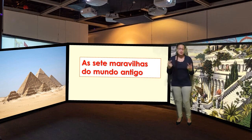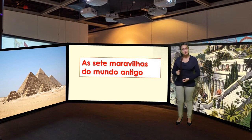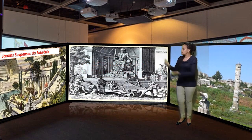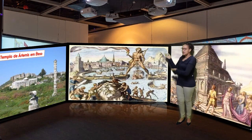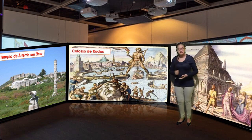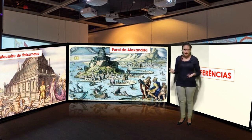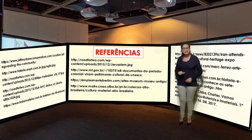Com o tempo, esses monumentos ficaram conhecidos no mundo todo, compondo as sete maravilhas do mundo antigo: Pirâmides do Egito, Jardins Suspensos da Babilônia, Estátua de Zeus, Templo de Ártemis em Éfeso, Colosso de Rodes, Mausoléu de Halicarnasso e o Farol de Alexandria. Aqui estão as referências da nossa aula.